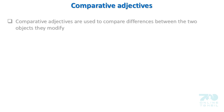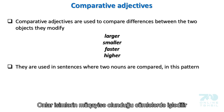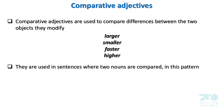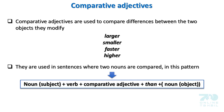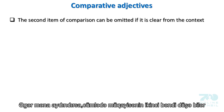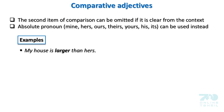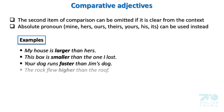Comparative adjectives are used to compare differences between two objects they modify — larger, smaller, faster, higher. They are used in sentences where two nouns are compared. The second item of comparison can be omitted if it's clear from the context. Absolute pronouns — mine, hers, ours, theirs, yours, his, its — can be used instead.